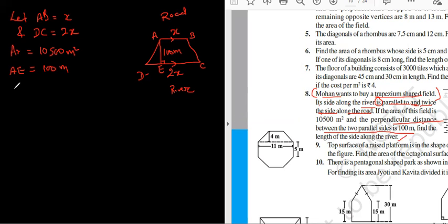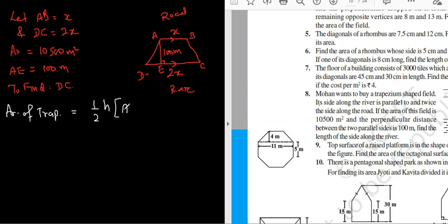Find the length of the side along the river. So I have to find DC. I hope I don't have to read the question again - I have all the information on my notebook. Now let us start with a very simple concept: what is the area of trapezium formula? It's half into the height times bracket a plus b. So half times height times AB plus DC, which is the sum of the parallel sides.